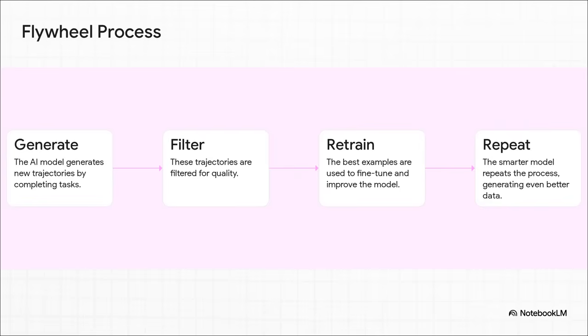Here's how it works. Step one. The AI agent tries to complete a bunch of tasks and creates records of its attempts. They call these trajectories. Step two. Those attempts get filtered for quality. Only the good ones make the cut. Step three. Those high-quality examples are then used to retrain the model, making it smarter. And then, you guessed it, step four. The cycle repeats. The now smarter model goes back and generates even better data.